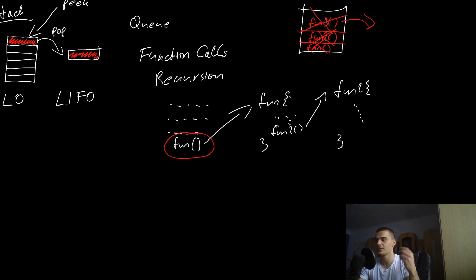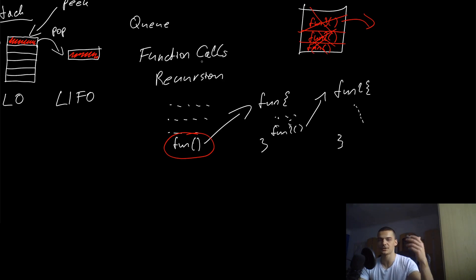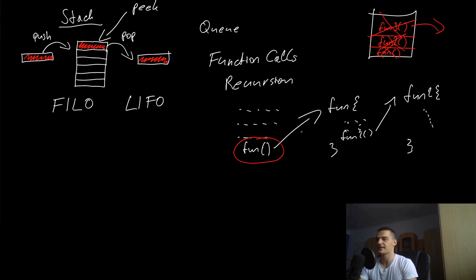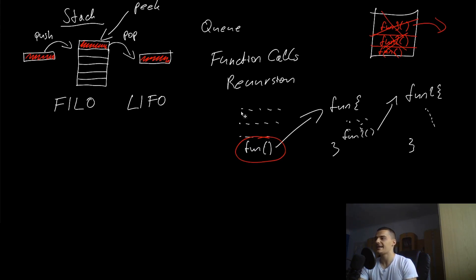The same principle applies to recursion. When you call a function recursively, you always push onto the stack where you want to return to once that single recursive call is done. This is why stacks are used to process both function calls and recursions.